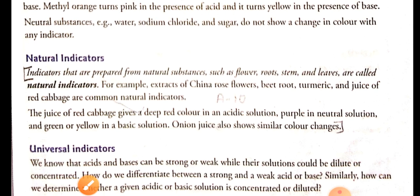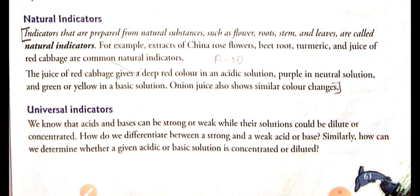Now we will see natural indicators. Indicators prepared from natural substances are called natural indicators, such as turmeric, China rose flower, beetroot, and juice of red cabbage. These are formed from parts of plants like leaves, stems, and roots. The juice of red cabbage turns deep red in acidic solution, purple in neutral solution, and green or yellow in basic solution. Onion juice also shows similar color changes.